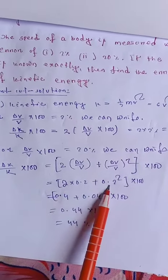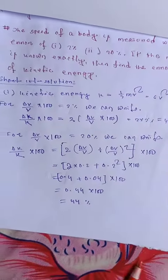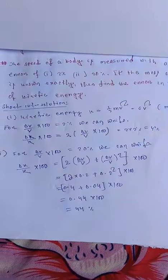Calculating: 2 times 0.2 plus 0.2 squared equals 0.44, so the error is 44%.